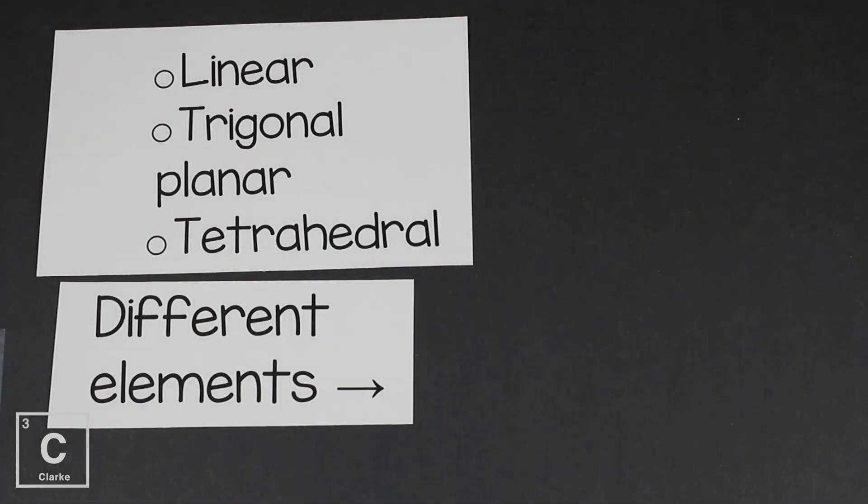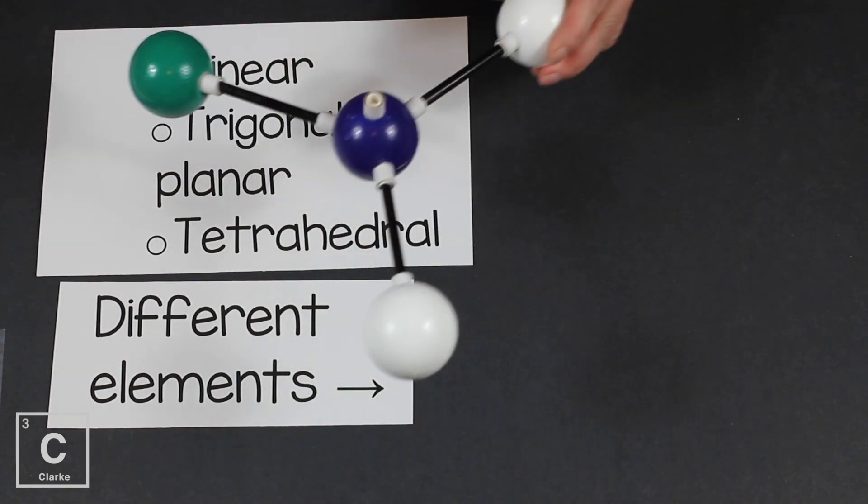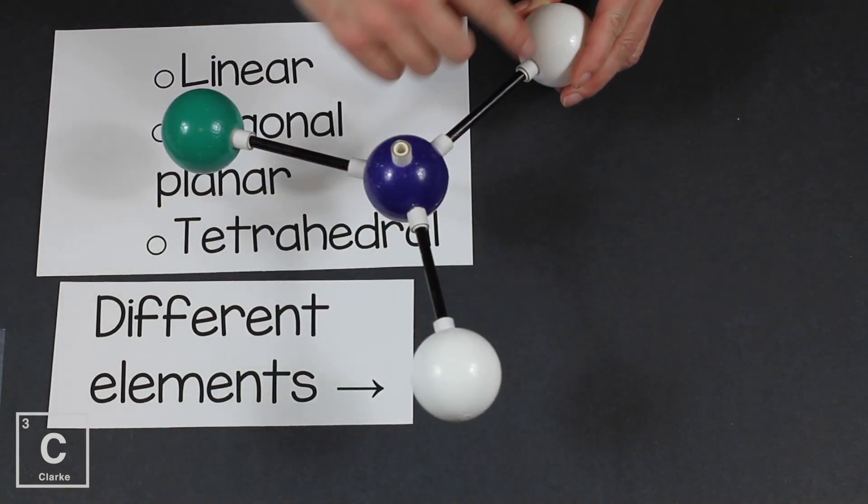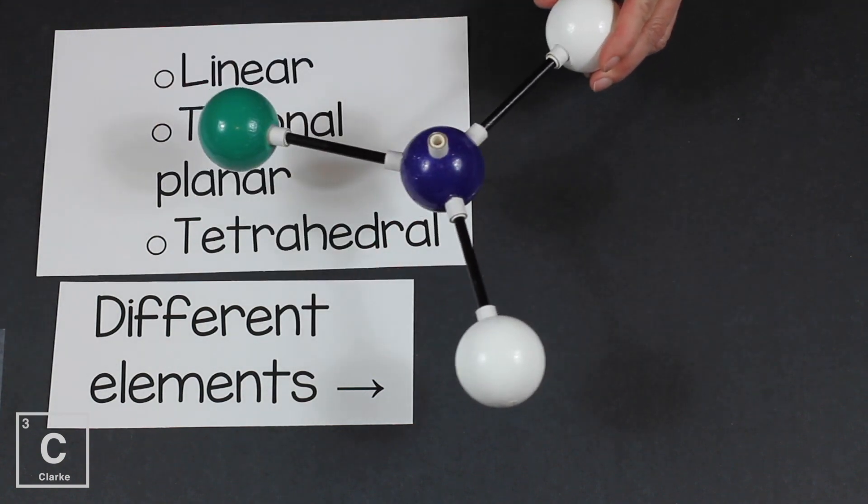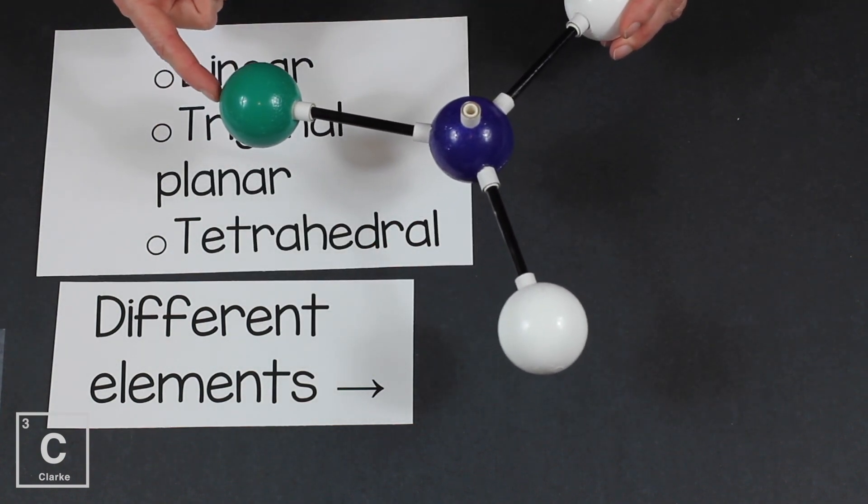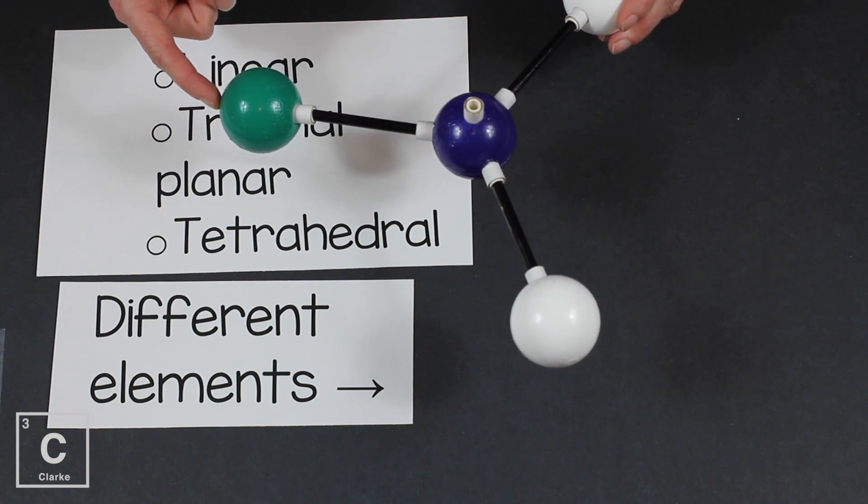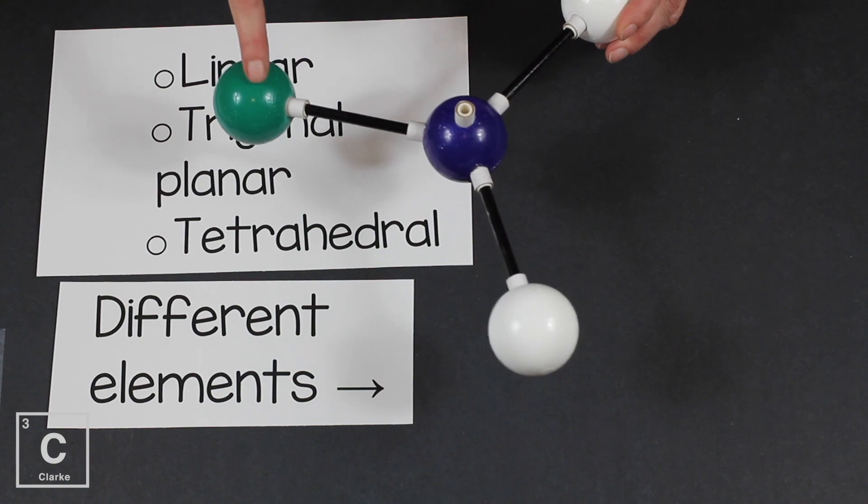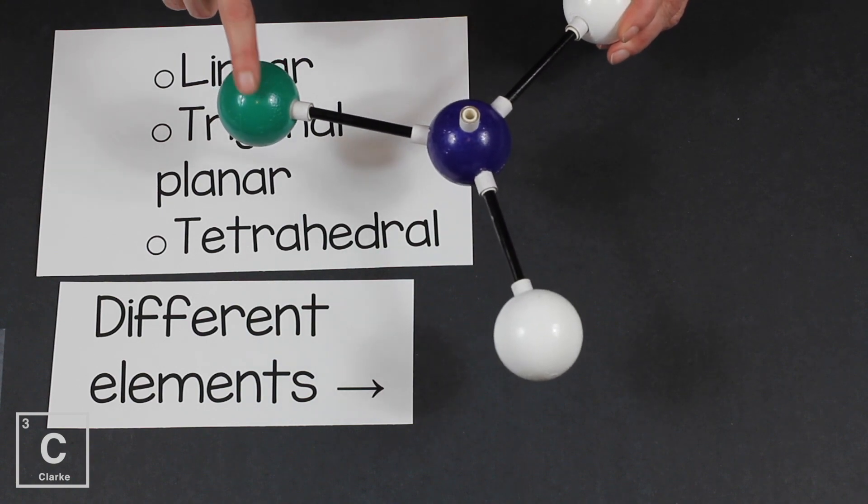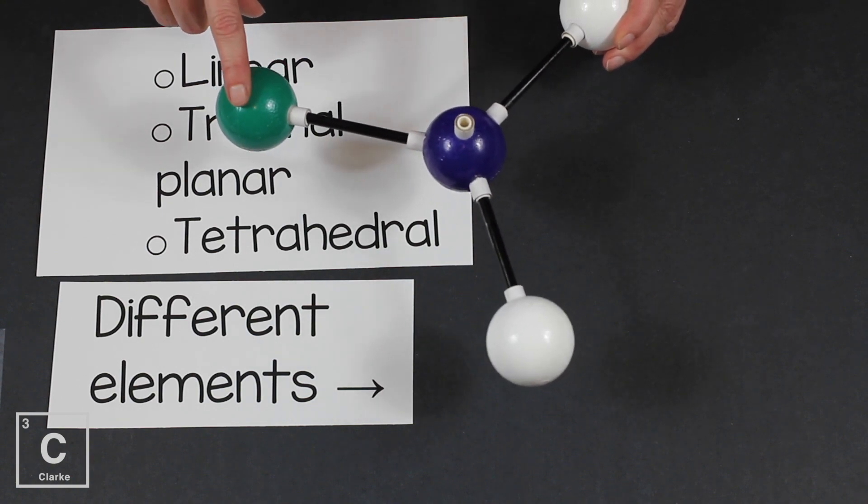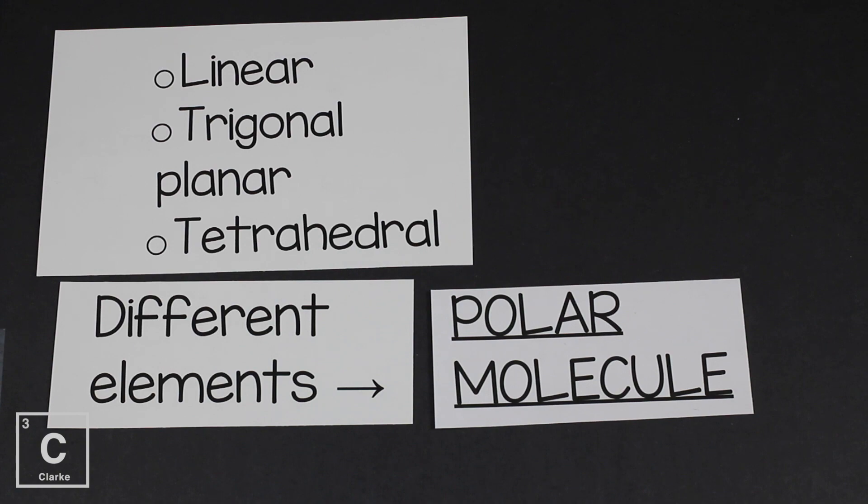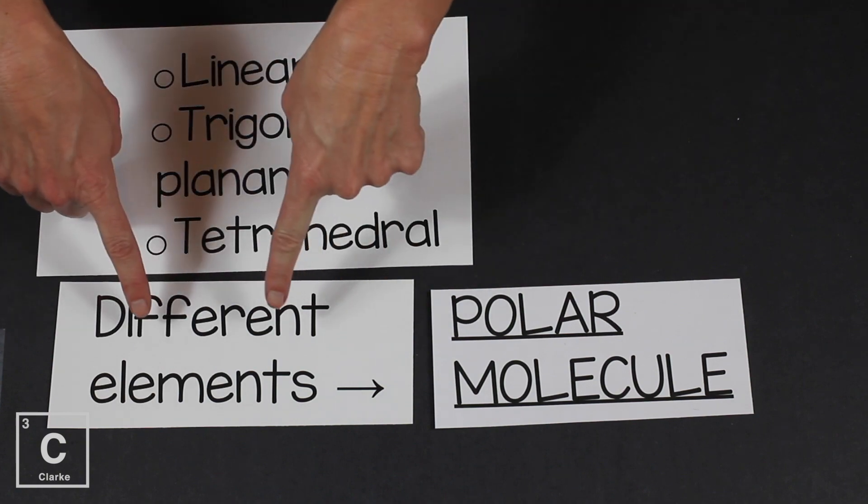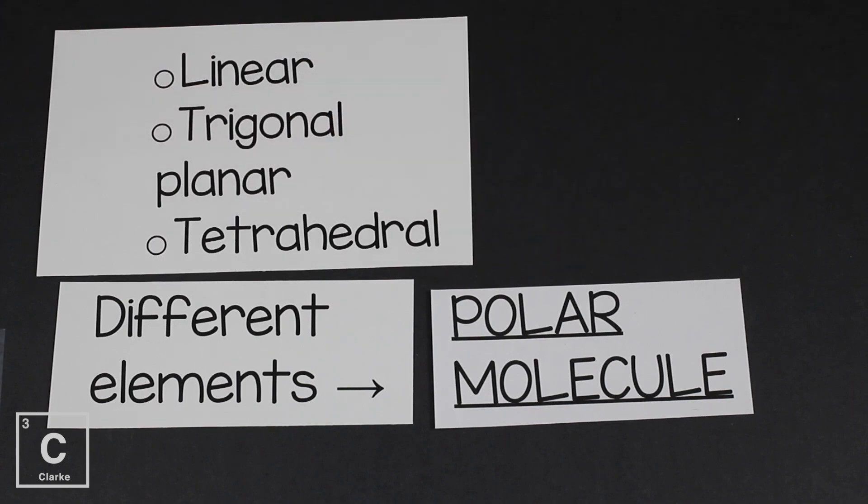Sometimes you can have these symmetrical shapes but not all the atoms all the way around are the same element. For example, here, we said the two white atoms had the same strength if we were playing tug-of-war. Oh, but look at this green one. This green one is much stronger. So even though this is a symmetrical shape, they don't cancel each other out. Someone's going to win tug-of-war. And if someone's going to win tug-of-war, that's a polar molecule. Symmetrical shape, different elements all the way around, polar molecule.